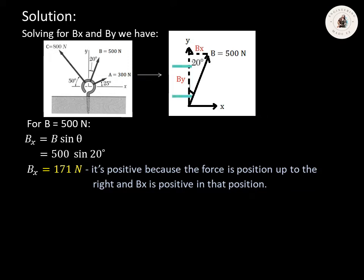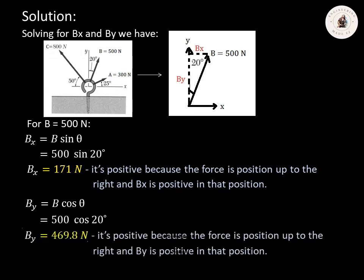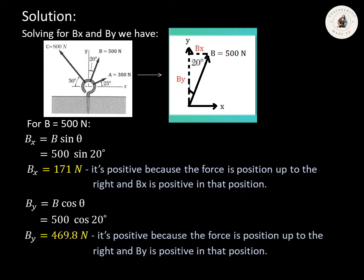Solving for BY: as you can see in the figure, BY is at the adjacent side. So BY equals B multiplied by cosine theta. B is 500 Newton and theta is 20 degrees, so BY equals 500 multiplied by cosine 20 degrees. Using our calculator, BY equals 469.8 Newton. The sign convention is positive because the force is positioned up to the right and BY is positive in that position.